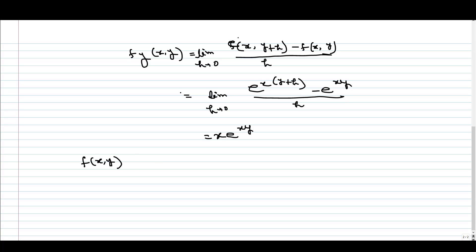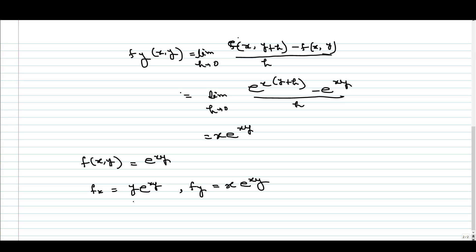For this function f(x,y) = e^(xy), fx equals y·e^(xy) and fy equals x·e^(xy). When we are differentiating with respect to x, we treat y as a constant, and when we are differentiating with respect to y, we treat x as a constant. That is how we get these two functions. From the definition, what we calculated matches exactly. This is the way you can calculate the partial derivative of a multivariable function.